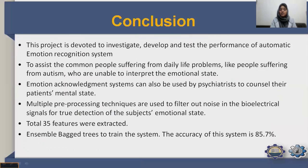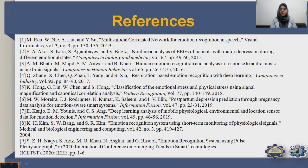In conclusion, this project investigates, develops, and tests an automatic emotion recognition system to improve human-computer interaction. It assists people suffering from conditions like autism who are unable to interpret their emotional state. Emotion recognition systems can also help psychiatrists assess patients' mental states. Multiple pre-processing techniques filter noise from bioelectrical signals, 35 features were extracted, ensemble bagged trees was used to train the system, and an accuracy of 85.7% was obtained.